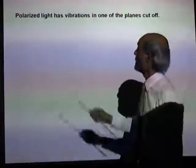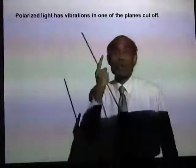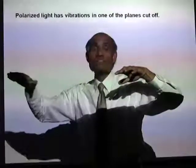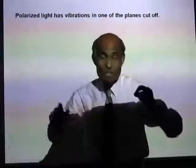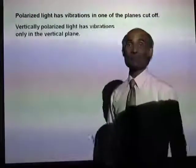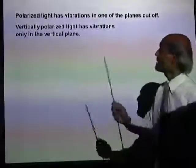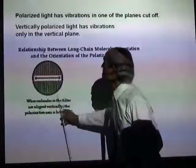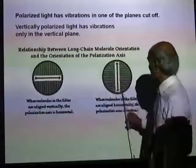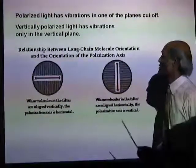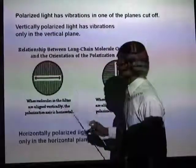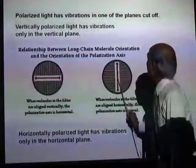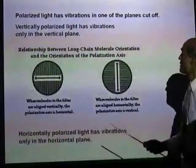Polarized light has vibrations in only one plane. If you can cut off vibrations in the vertical plane, then only the horizontal vibrations will survive — that light will have only half the intensity of the original light. Vertically polarized light has vibrations only in the vertical plane; horizontally polarized light has vibrations only in the horizontal direction.